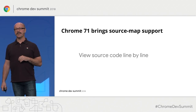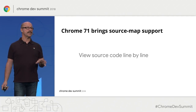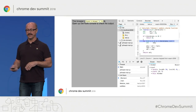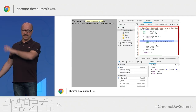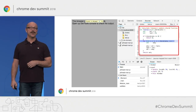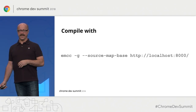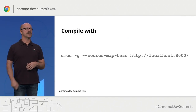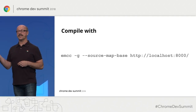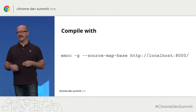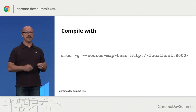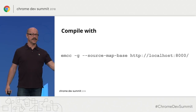Chrome 71 brings source map support, as Thomas mentioned earlier. Source maps let you change what you saw before into something that looks like actual source code — like the source code of the Fibonacci function sitting in DevTools — where you can single-step over instructions, set breakpoints, and do all sorts of things. If you want to generate the source map yourself, you just need to set two flags on the EMCC compiler command line: `-g` to generate debug symbols, and `--source-map-base` pointing to a URL where it will find the source map file.